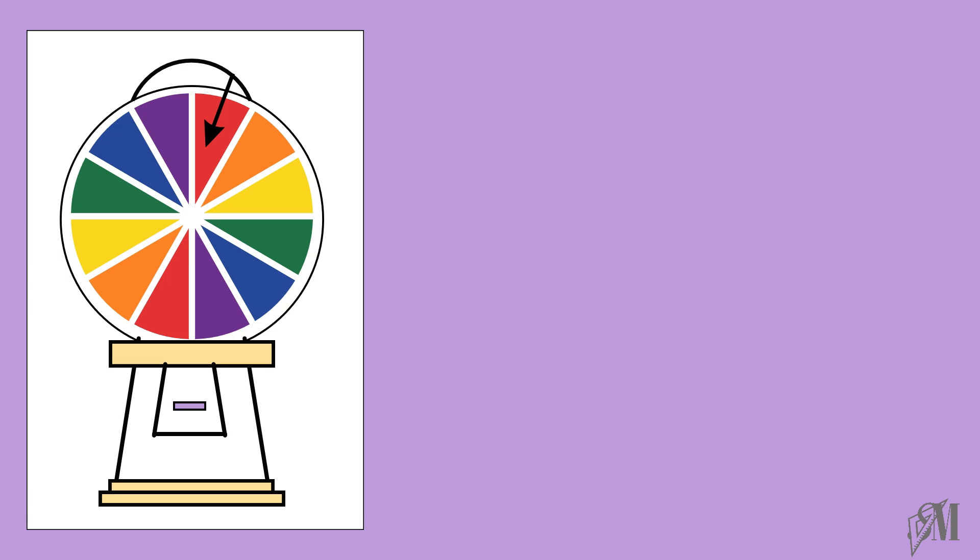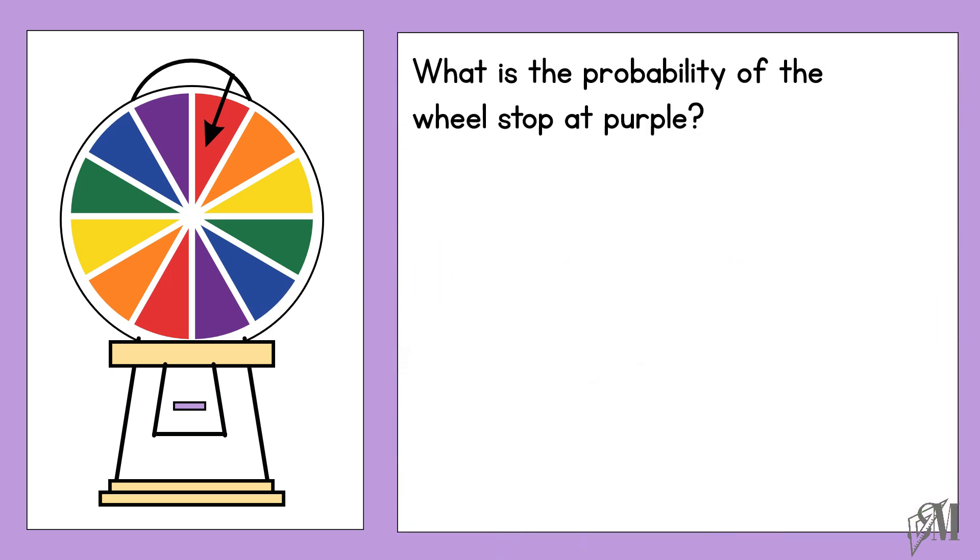Here is a wheel which can rotate around the center and the wheel is divided into 12 equal parts with different colors. So let us see what the first question is. What is the probability of the wheel stopping at purple? If you see clearly, out of the 12 parts, 2 parts are purple in color. So the probability of the wheel stopping at purple is 2 over 12.